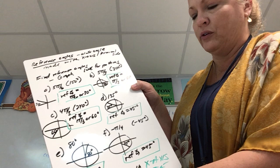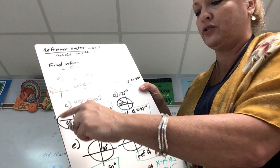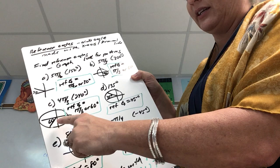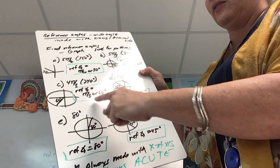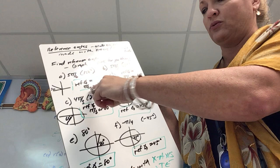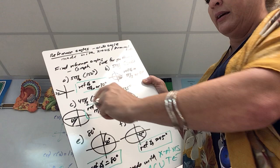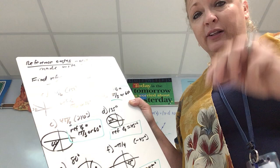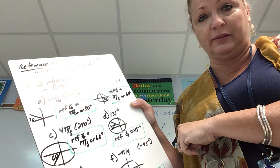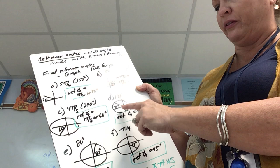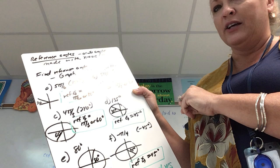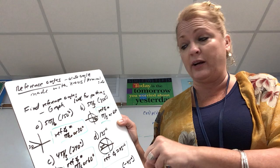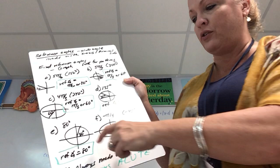For 4π/3, that's 240°, in quadrant three. The angle made with the x-axis is 60°, so the reference angle is π/3. Look at the pattern in radians: 5π/6 → π/6, 5π/3 → π/3, 4π/3 → π/3. The reference angle tends to share the same denominator as the original angle. For 135°, graphing gives a 45° angle with the x-axis, so the reference angle is 45°. These reference angles come from special right triangles: 30s, 60s, 45s.